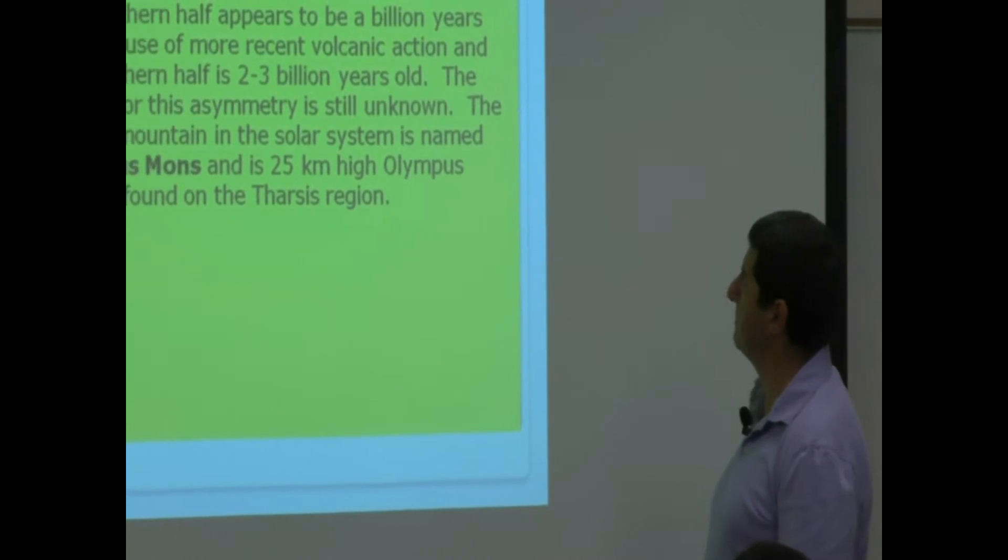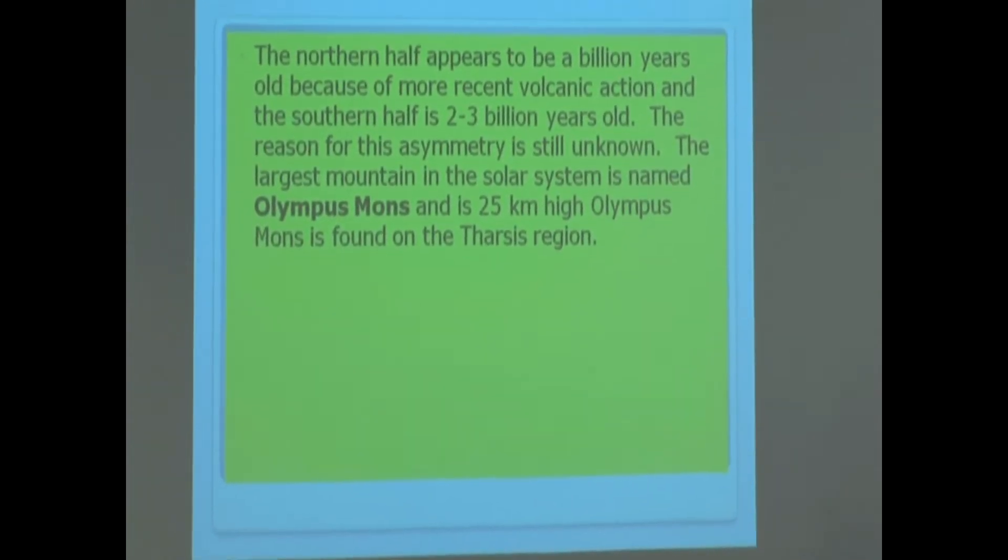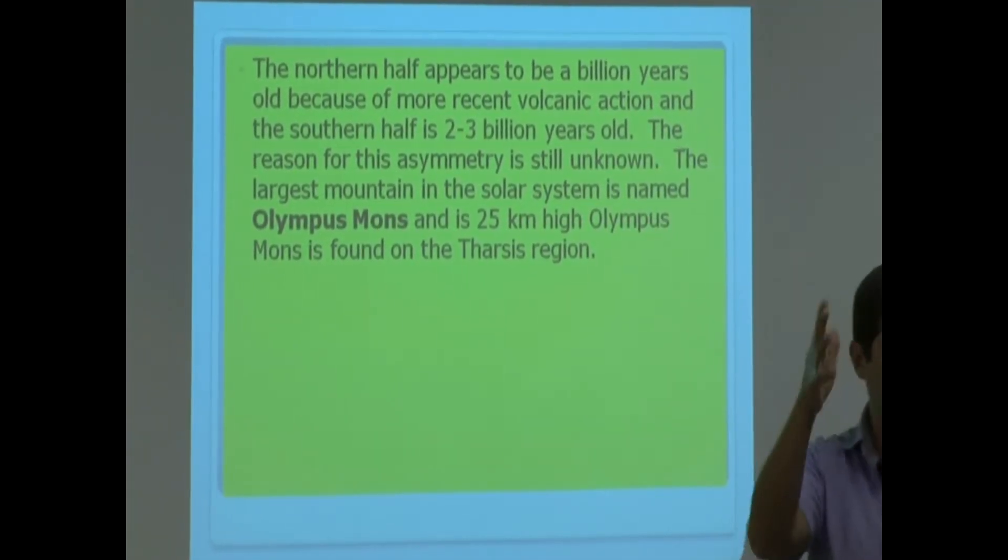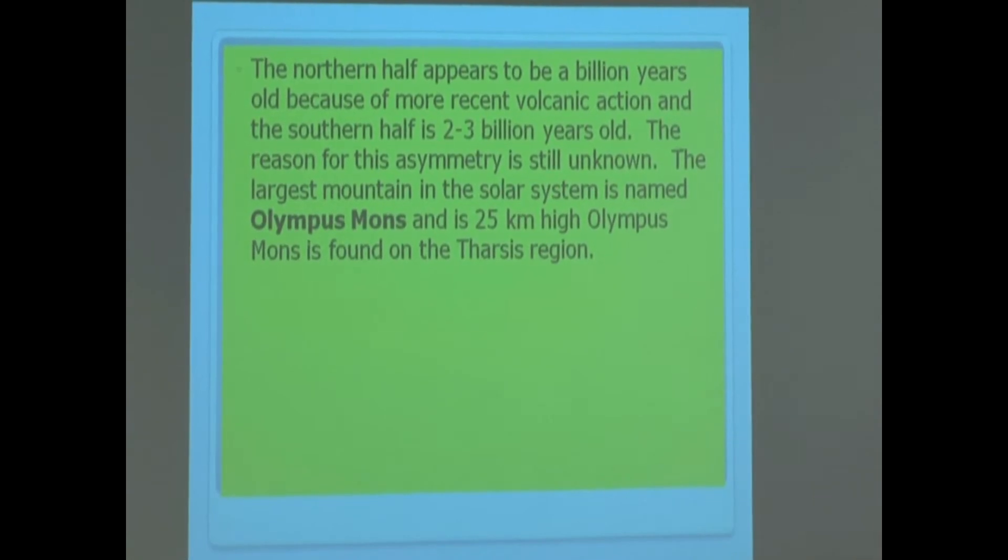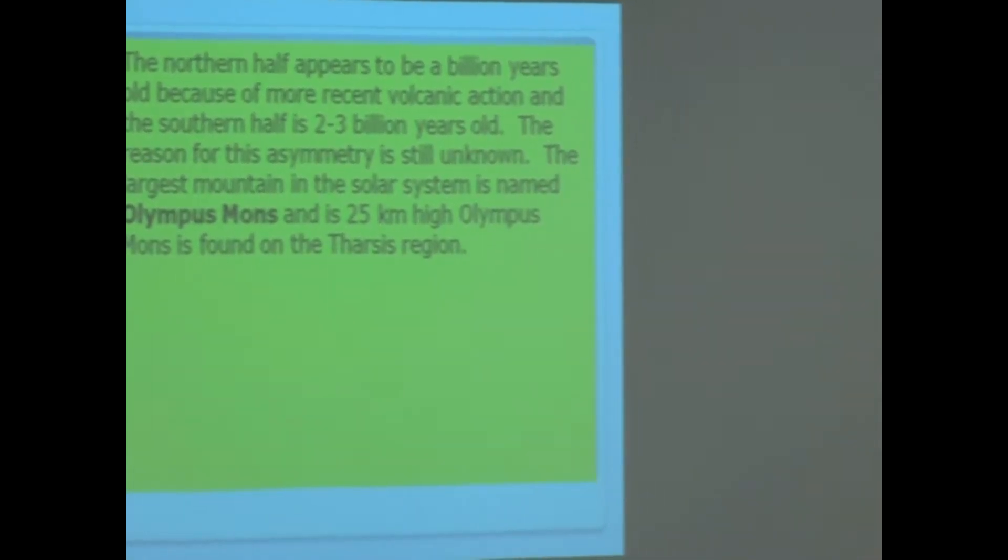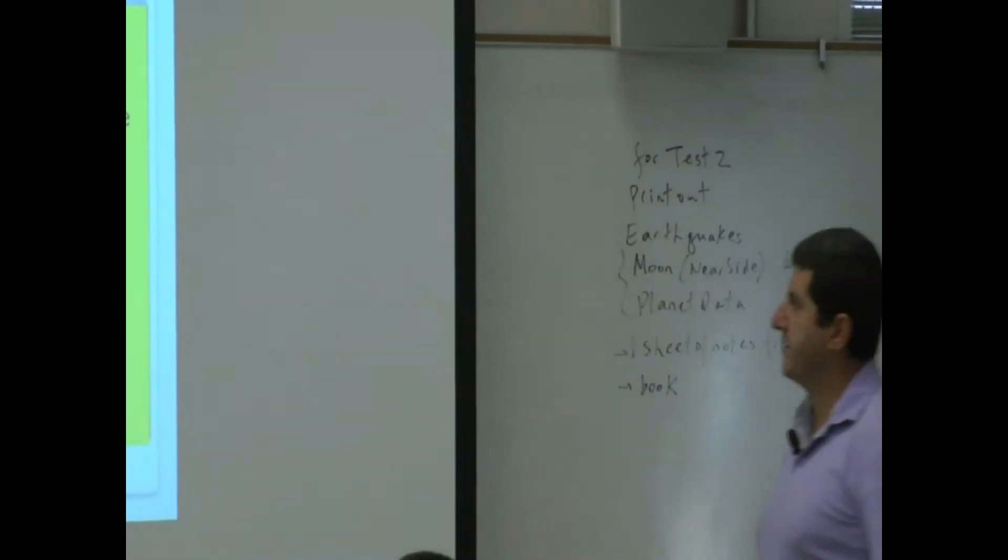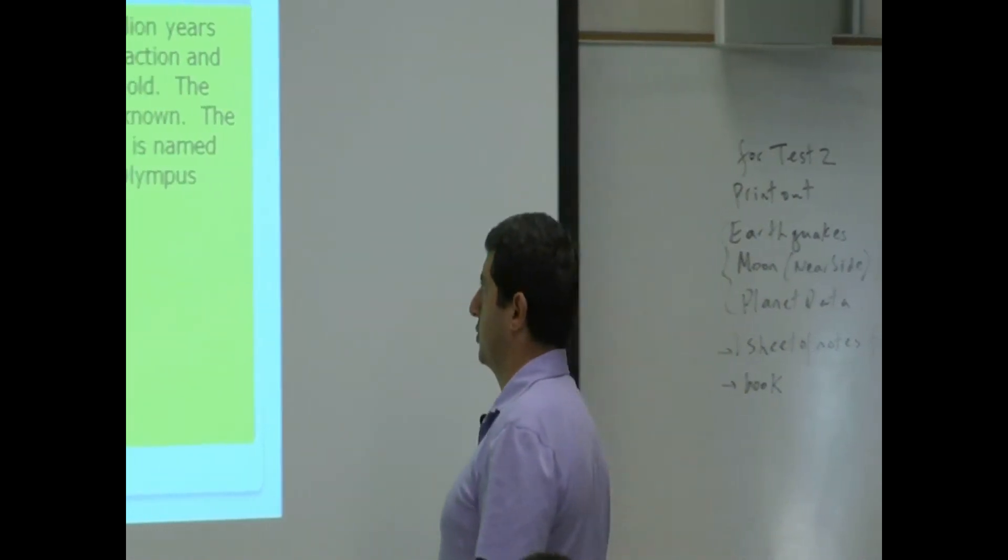The northern half appears to be a billion years old because of more recent volcanic action. You see this lava that has flowed and covered up the craters? So the northern half is much younger. And the southern half is two to three billion years old.